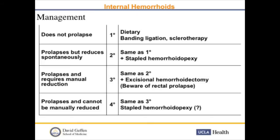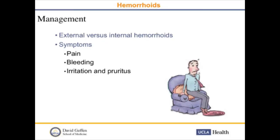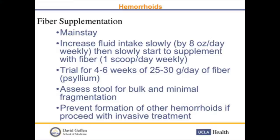The mainstay of therapy would be dietary, progressing to banding, injection sclerotherapy, followed by hemorrhoidectomy. Management also depends on whether hemorrhoids are external versus internal and whether patients have symptoms. A lot of patients have hemorrhoids — most patients past a certain age do — but we really want to tailor therapy to whether patients are having significant discomfort, most often pain or bleeding.